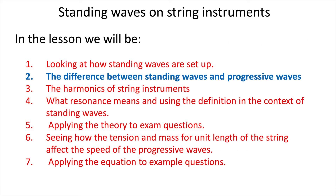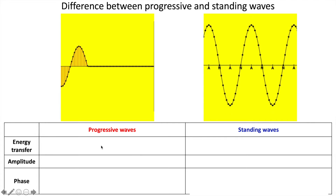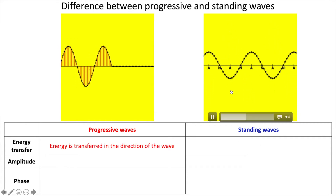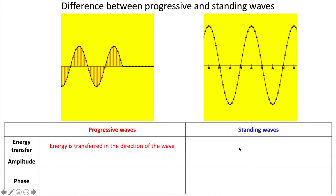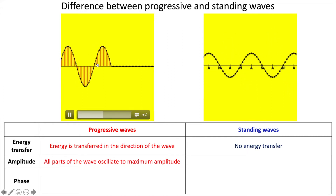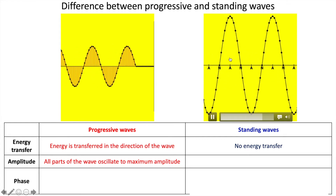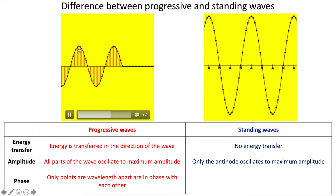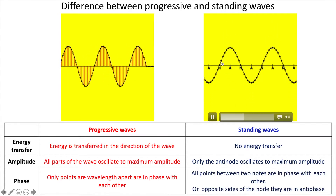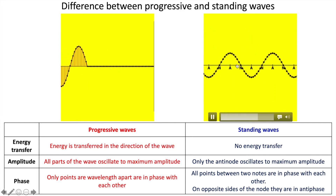Now let's look at the difference between standing waves and progressive waves. With a progressive wave, the waveform is moving and so energy is transferred, whereas with a stationary wave the wavefront is not moving and energy is not transferred. With a progressive wave, all points oscillate to maximum amplitude, whereas on a standing wave only points at an antinode oscillate to maximum amplitude. In terms of phase, points one wavelength apart are in phase on a progressive wave, whereas on a standing wave all points between nodes are in phase and points either side of a node are in antiphase.